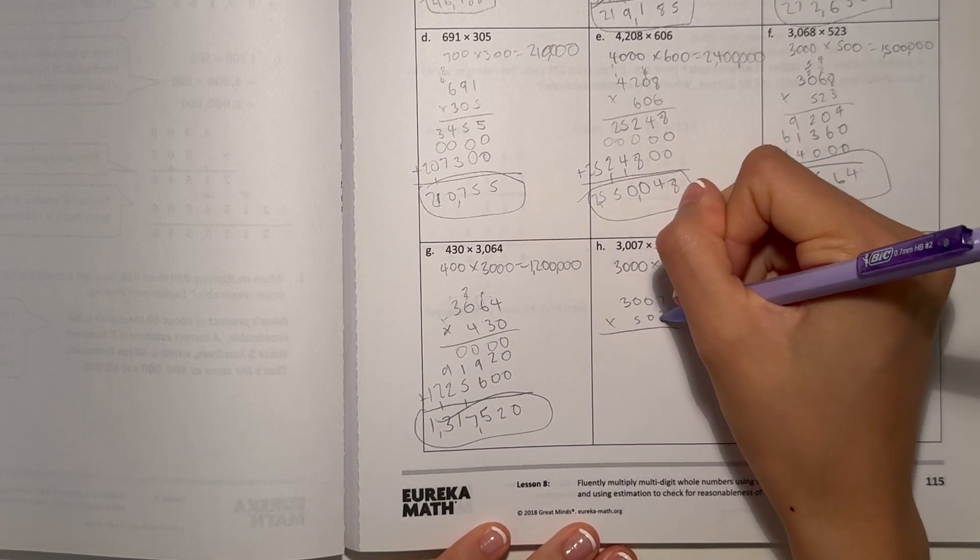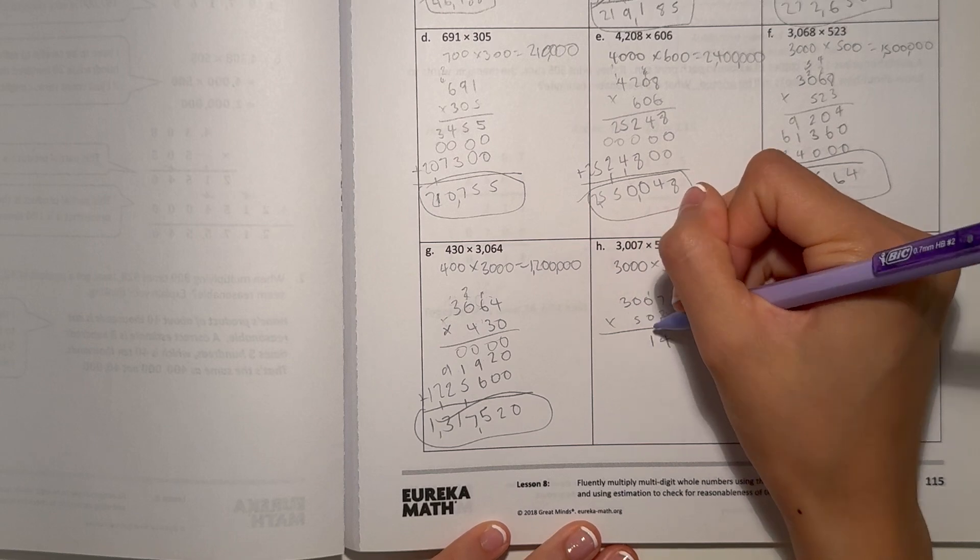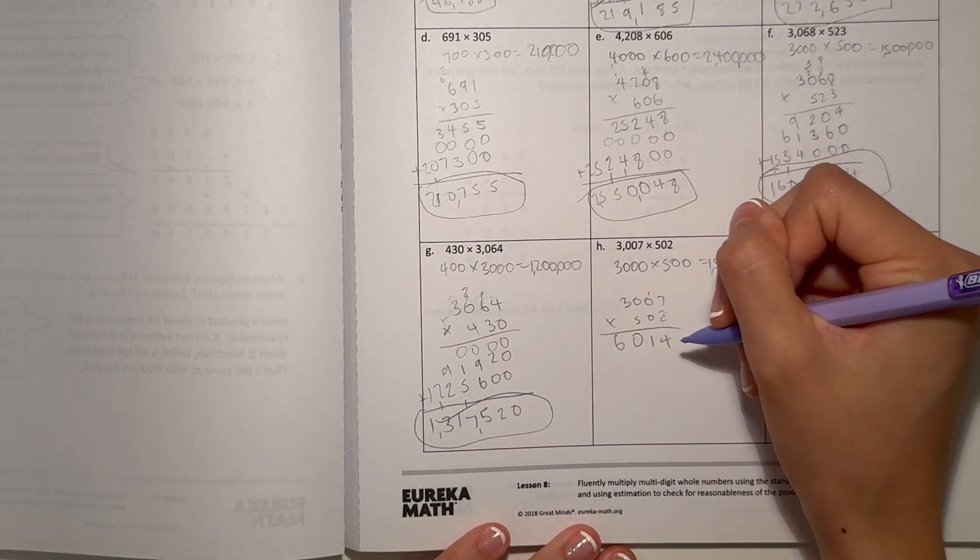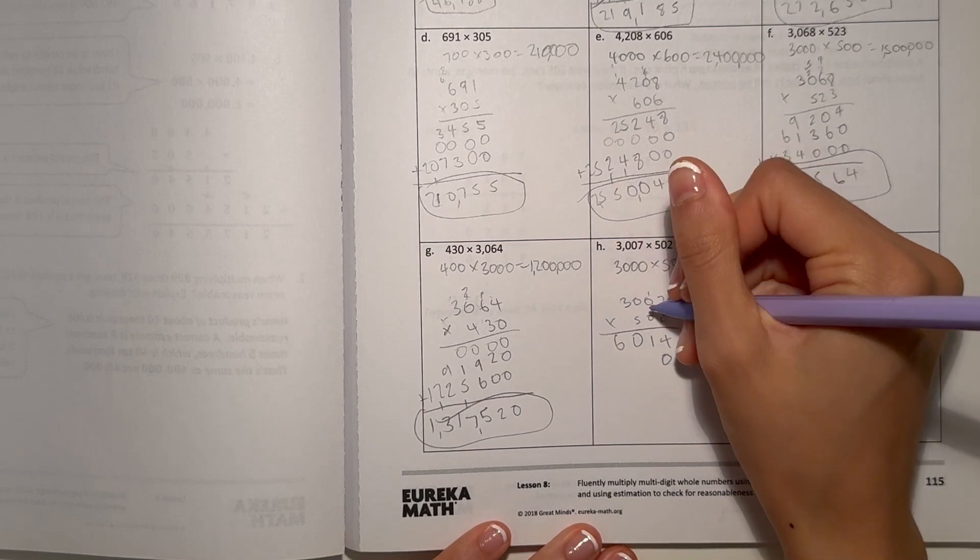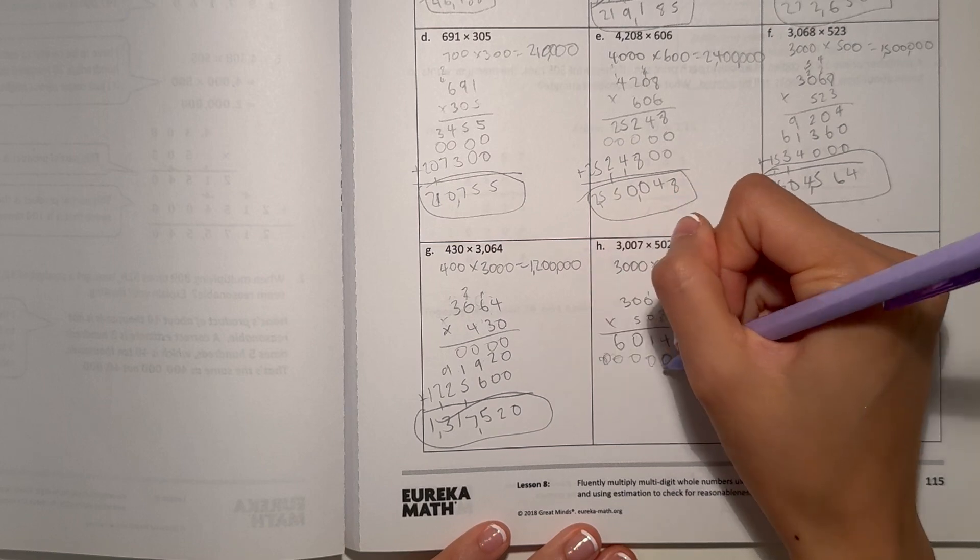Let's look at the 2. 7 times 2 is 14. 0 times 2 is 0, plus 1 is 1. 0 times 2 is 0, and 3 times 2 is 6. Now 0, 7 times 0, this whole row would be 0.